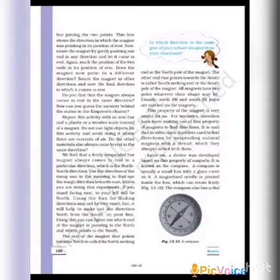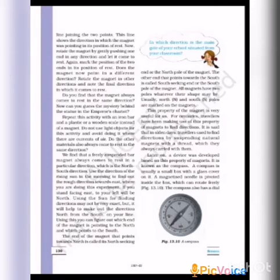The magnet is used to find direction — to indicate direction. A device was developed based on this property of the magnet. Based on this property, a device was developed, and that device is the compass. A compass is usually a small box with a glass cover on it. A magnetized needle is put inside the box so it can rotate freely.